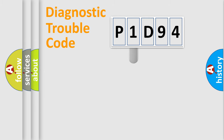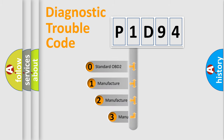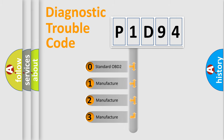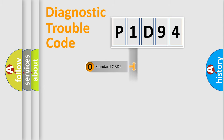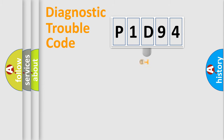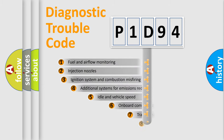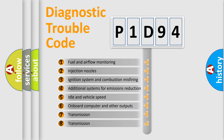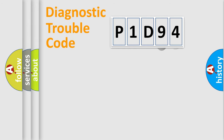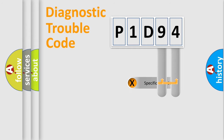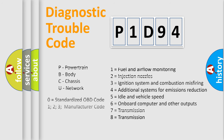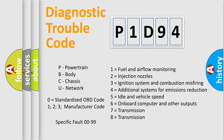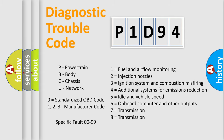This distribution is defined in the first character of the code. If the second character is expressed as zero, it is a standardized error. In the case of numbers 1, 2, or 3, it is a manufacturer-specific error. The third character specifies a subset of errors. This distribution is valid only for the standardized DTC code, and only the last two characters define the specific fault of the group.